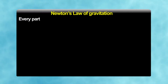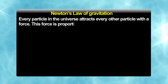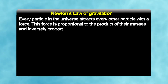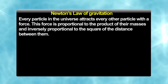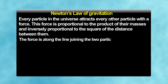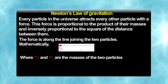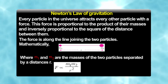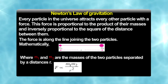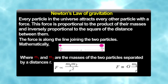Every particle in the universe attracts every other particle with a force. This force is proportional to the product of their masses and inversely proportional to the square of the distance between them. The force is along the line joining the two particles. Mathematically, where m1 and m2 are the masses of two particles separated by distance r, F = G·m1·m2 / r².